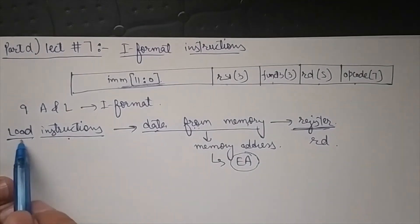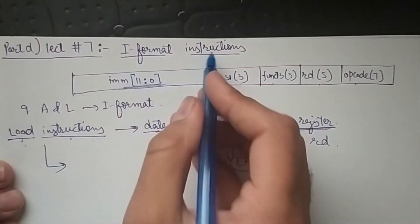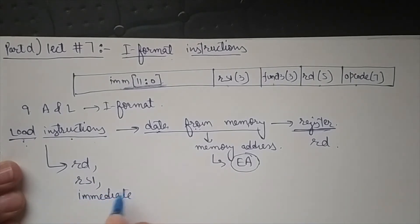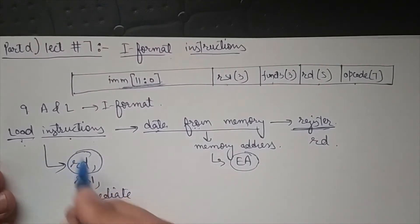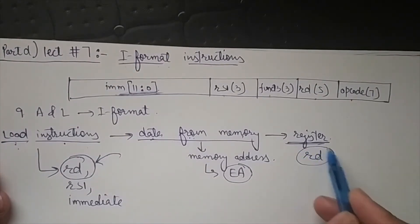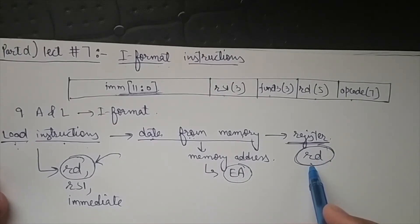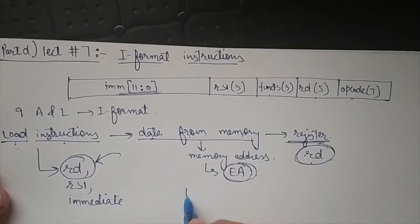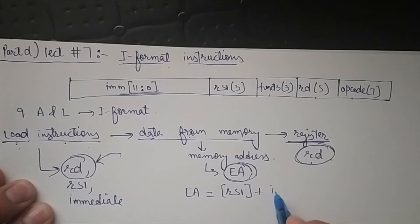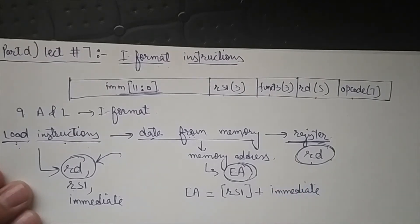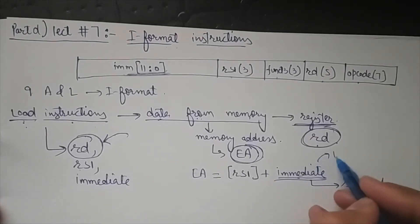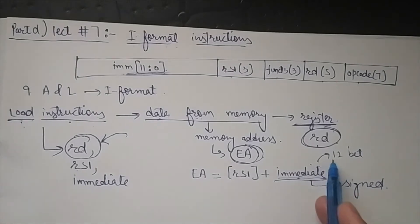We require two entities: the destination register in which we place the final value, and the effective memory address. The effective memory address is calculated using the contents of RS1 plus the immediate value. The immediate value here is a signed number, not an unsigned number. That means when we convert this 12-bit immediate into a 32-bit entity, we will sign-extend it.